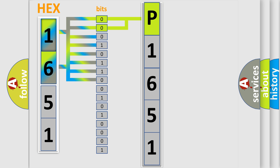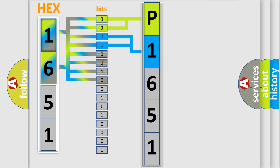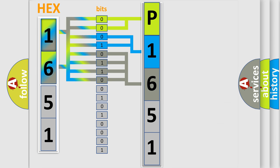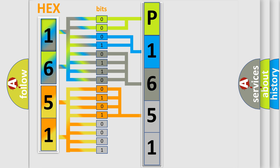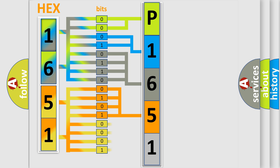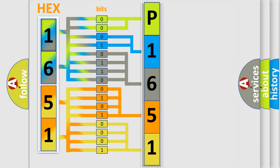The next two bits determine the second character. The last four bits of the first byte define the third character of the code. The second byte is composed of a combination of eight bits. The first four bits determine the fourth character of the code, and the combination of the last four bits defines the fifth character. A single byte conceals 256 possible combinations.